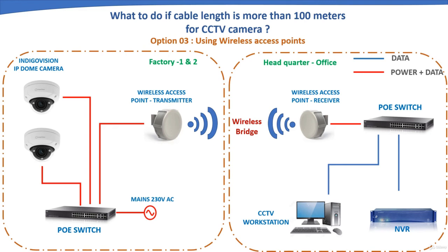The third option is using wireless access points. Data can be transmitted wirelessly without using any type of cables between the network switch and IP camera, and the distance between devices may go up to kilometers. However, we must ensure there is a clear line of sight between the wireless access point transmitter and receiver and no interference. As shown, cameras at Factory 1 and Factory 2 transmit video wirelessly to the headquarter office. We must also ensure the bandwidth requirement is within the wireless access point limits.